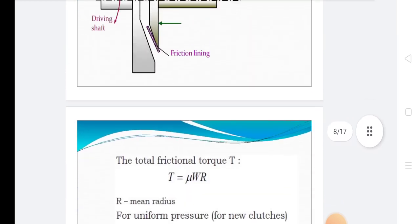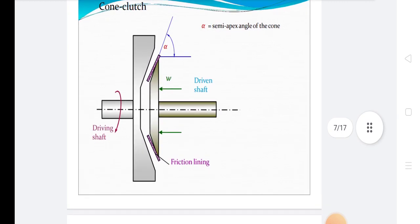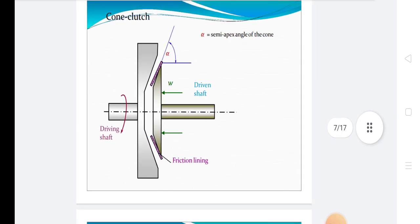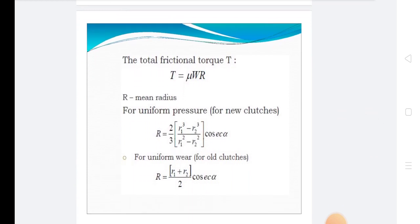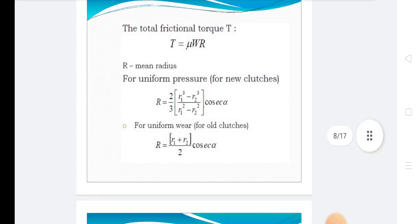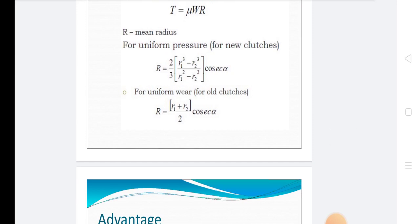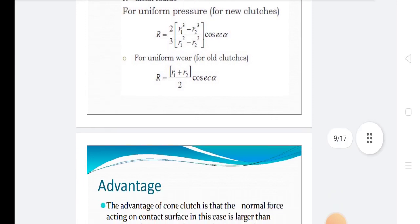This is the diagram of the cone clutch. In the diagram, the angle phi is given — this is the semi-apex angle of the cone. There is also the friction lining and the driven shaft speed. The total friction torque is given by T = mu × W × R, where R is the mean radius. For uniform pressure (new clutches): R = (2/3) × (R1³ - R2³) / (R1² - R2²) × cosec(alpha). For uniform wear (old clutches): R = (R1 + R2) / (2 × cosec(alpha)).